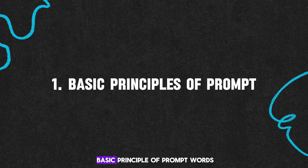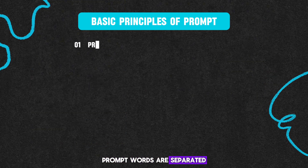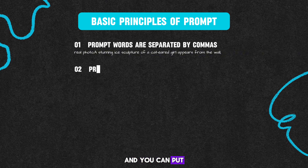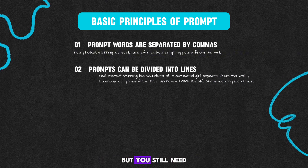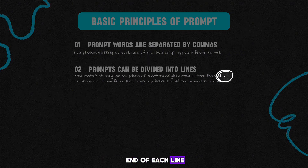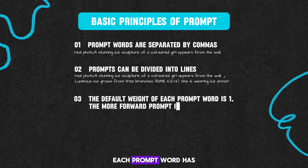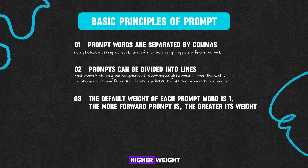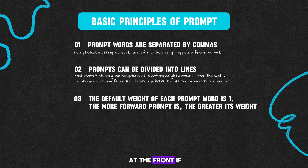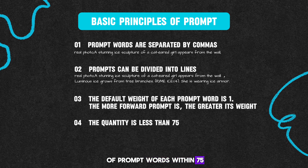First off, let's check out the basic principle of prompt words. Prompt words are separated by commas, and you can put prompt words on different lines, but you still need a comma at the end of each line. As for weight, each prompt word has a default weight of 1, but the words at the front get a higher weight, so put important words at the front if you can. Finally, keep the number of prompt words within 75 — if there are too many words, they won't have much control over the picture.